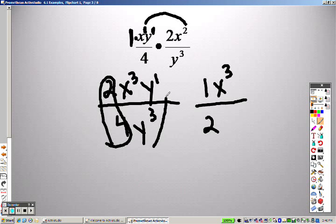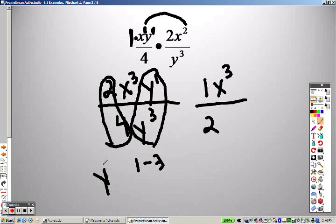But this right here, what do you do with division? I have y to the first and y to the third. Well, whenever you have division, you subtract it. So it's 1 minus 3. And 1 minus 3 is y to the negative 2.